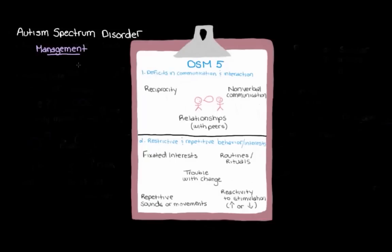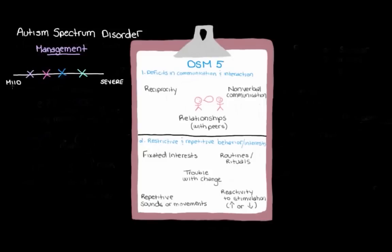Something we need to keep in mind when thinking about managing autism spectrum disorder is that someone with ASD falls along a spectrum. How much trouble they have with communication and interaction and restricted and repetitive behaviors really varies a lot between different people. So we want to individualize management plans to make sure they address each person's strengths and symptoms, because this can vary greatly depending on where along the autism spectrum the person falls.